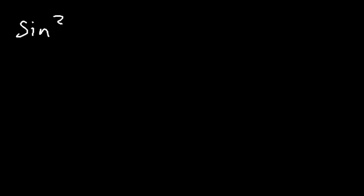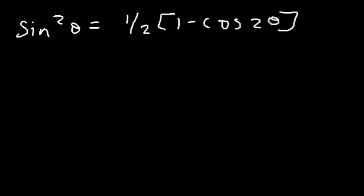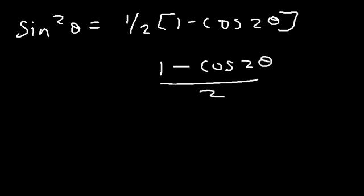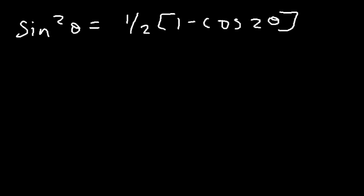In this video we're going to reduce or simplify trigonometric expressions using power reducing formulas. The first formula you need to know is sine squared theta, which equals one-half times (1 minus cosine 2θ). In your textbook you may see it written as (1 minus cosine 2θ) divided by 2 — it's the same thing.